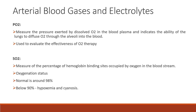Next is the partial pressure of oxygen (PO2). This measures the pressure exerted by dissolved oxygen in the blood plasma and indicates the ability of the lungs to diffuse oxygen through the alveoli into the blood. It is used to evaluate the effectiveness of oxygen therapy. Oxygen saturation measures the percentage of hemoglobin binding sites occupied by oxygen; the normal value is around 98%, and below 90% indicates hypoxemia and cyanosis.